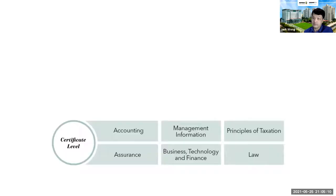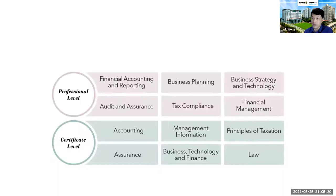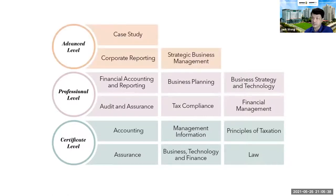The program starts at the certificate level where, if you have a degree, all six papers will be exempted. There is also a deal with the university whereby certain papers at the professional level are also exempted. By the time you take your third-year examinations, I believe you'll be exempted for all 12 papers at the certificate and professional levels, leaving only the final three papers to take.